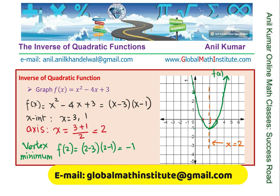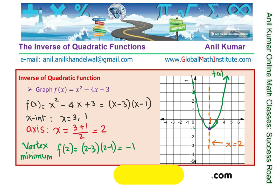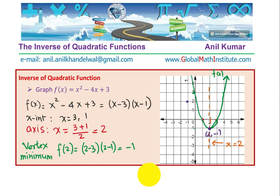Once we have the function sketched using factored form — found the x-intercepts, the average gave us the axis, and the y-value at the axis is the vertex, which is the minimum here — now the idea is how do we sketch the inverse of the function? The inverse means x and y coordinates will swap. Here we have vertex (2, minus 1), so swapping gives us (minus 1, 2), which will be the vertex of the inverse function.